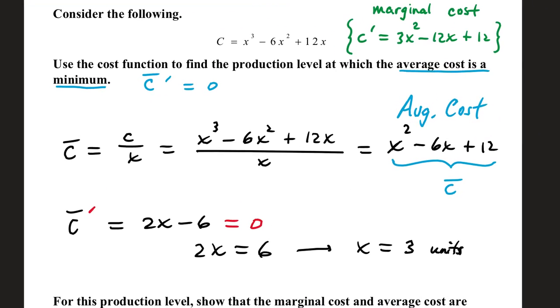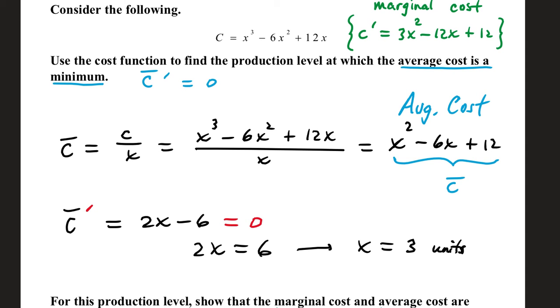Consider the following. We have a total cost function given, which is capital C. Marginal cost, we're going to have to calculate later at the bottom half of this problem. Marginal, we're going to take our first derivative. So if we take the first derivative of this cost function, we get 3x squared minus 12x plus 12. Use the cost function to find the production level at which the average cost is a minimum. Average cost is C bar. We're going to find where it's a minimum. First, let's build the average cost function. Capital C, which is given, divided by x. So this will become our numerator over x.